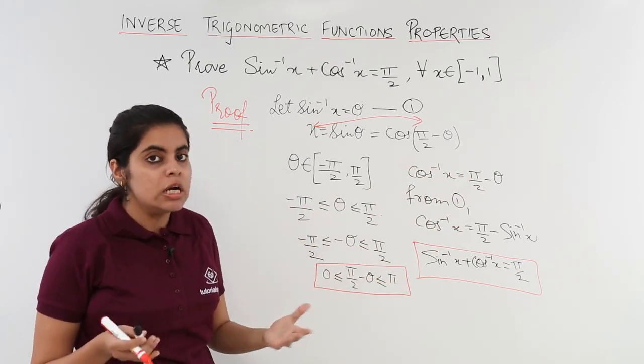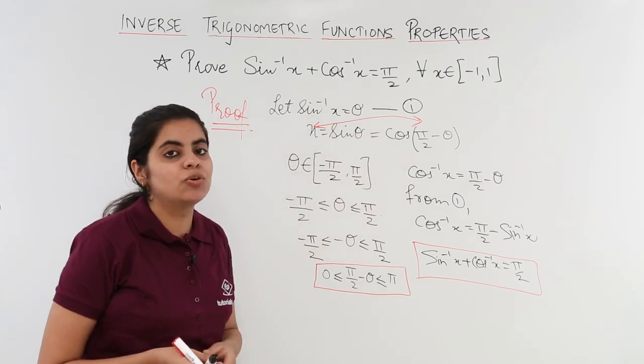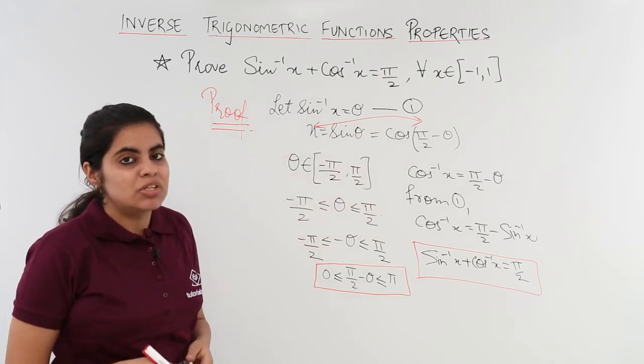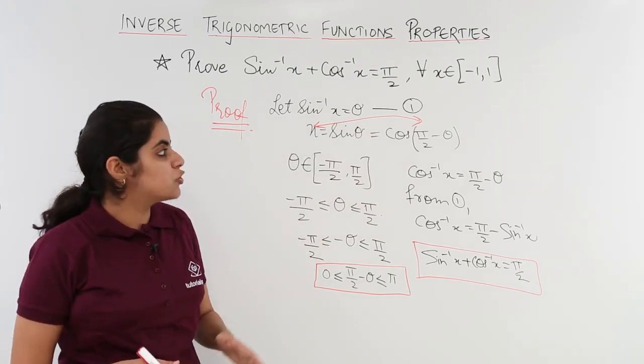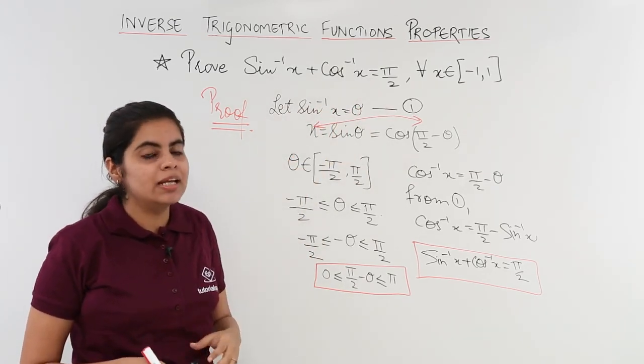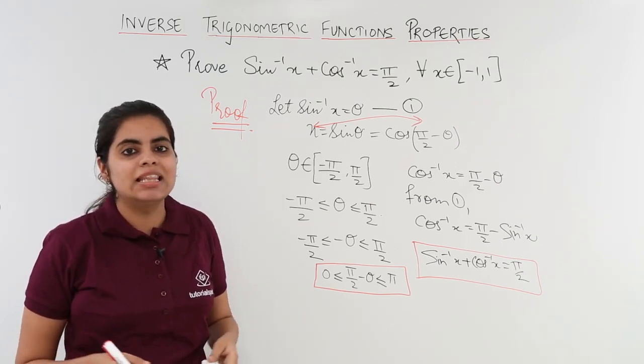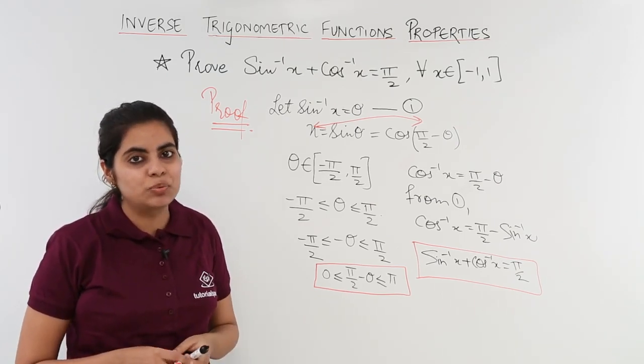0 to pi is the domain of cos theta we already know and here also 0 to pi would be satisfied. So in this video we saw the set of properties wherein the addition is followed and some value is obtained. We did the first one sin inverse x and cos inverse x. In the next video we'll be seeing the next proof.